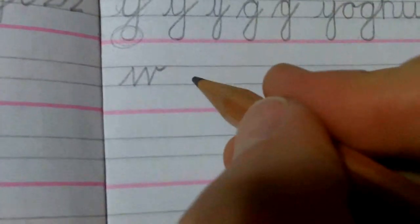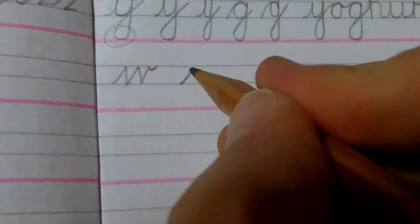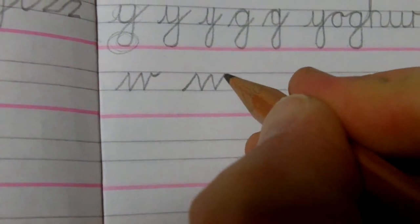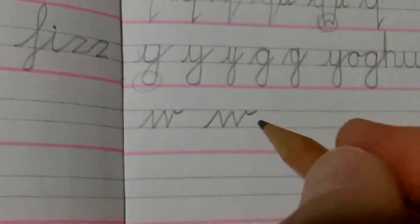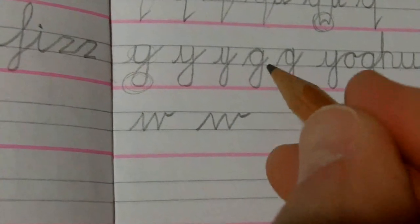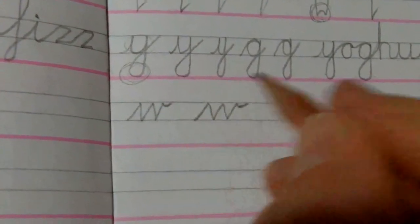Okay, so W joins at the top. I'll do that again. W joins at the top. It doesn't join across, go down and then go up. It joins at the top, always.